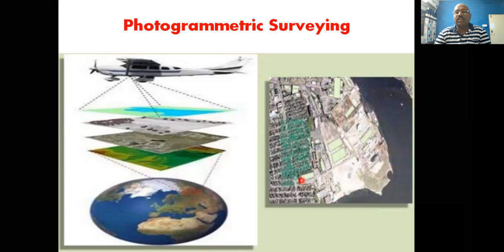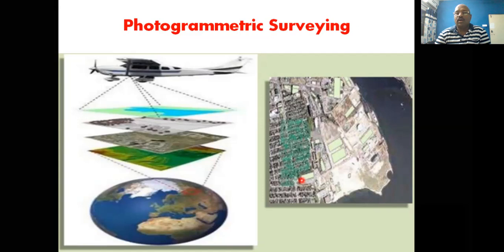To capture images and separate the data layer-wise is called layering. For example, in a college campus, ground features such as boundary walls, playgrounds, road networks, water bodies, buildings, vegetation, wasteland, electrical poles, and electrical lines are all captured separately in separate layers. As per the client or project requirement, you capture this data and obtain high-accuracy results.